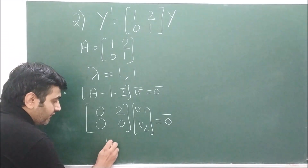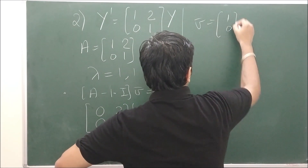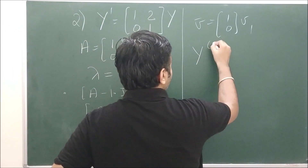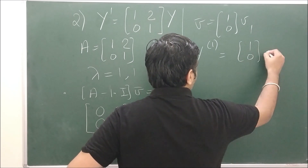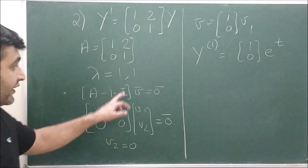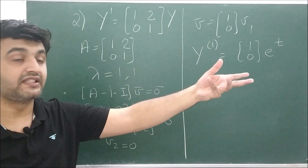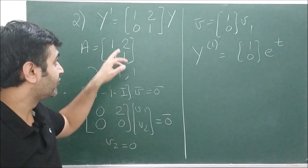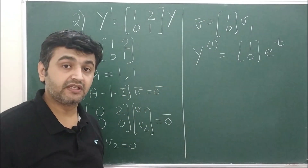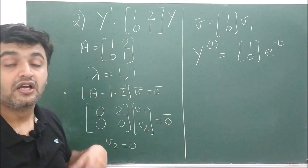Finding the eigenvector for λ = 1: solve (A − I)·v̄ = 0̄. Substituting gives [0, 2; 0, 0]·[v1, v2]ᵀ = 0, so v2 = 0, and v̄ = [1, 0]ᵀ·v1. You get only one eigenvector. The arithmetic multiplicity (AM) is 2 and the geometric multiplicity (GM) is 1. This means it is not a diagonalizable matrix. Since we have a 2×2 system we need two linearly independent solutions, but we are only getting one.